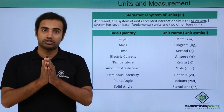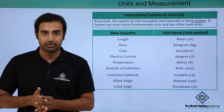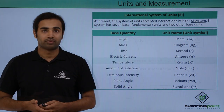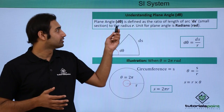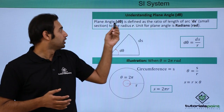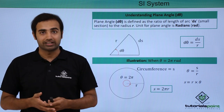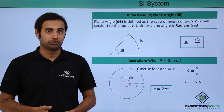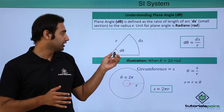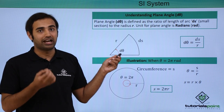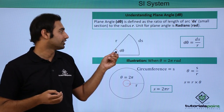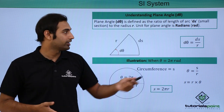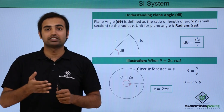We'll talk about dimensions later, but first let's understand plane angle and solid angle. The plane angle is defined as the ratio of the arc length to the radius r of the sector at which the angle is subtended. Its unit is radian. Over here we have a sector whose center angle is dθ, the radius is r and the arc length is ds, so dθ is defined as ds upon r.